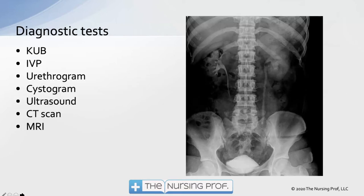Diagnostic tests include KUB (kidney-ureter-bladder) or flat plate abdomen x-ray, IVP, urethrogram, cystogram, ultrasound, CT scan, and MRI. With renal trauma, CT scan is typically preferred because it shows both the inside and outside of the kidney, whereas x-ray shows only the outside and IVP shows only the inside. Ultrasound is very handy and can pick up many renal injuries as well.